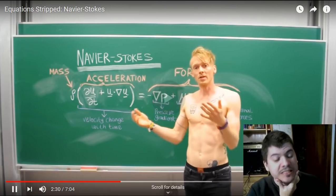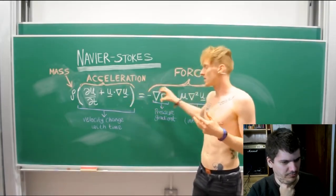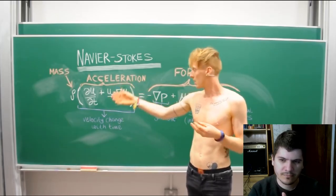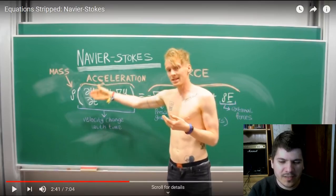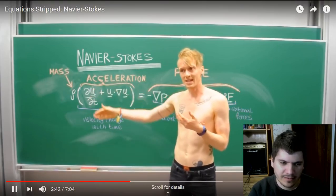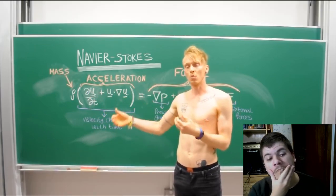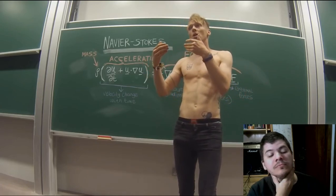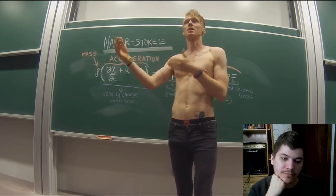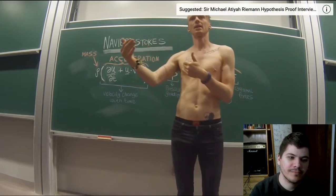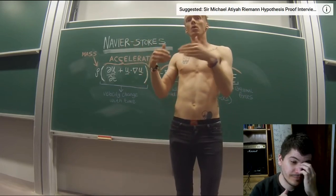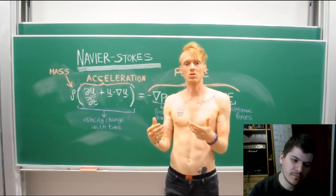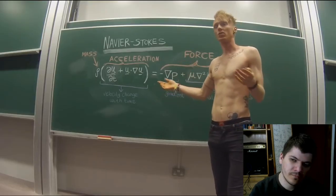Let's think about the individual terms in the equation. Starting on the left-hand side — the mass-acceleration part — why is he getting undressed? This term is saying: how does your velocity change with time? The experience you probably have of acceleration is in a car — you go from a road onto a motorway and speed up. So your velocity is changing over time. That's all this term says: how does the velocity of the fluid change over time.